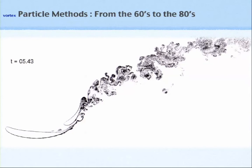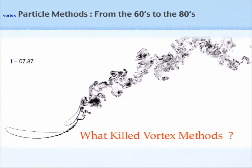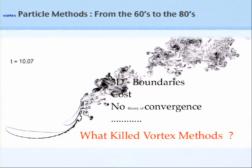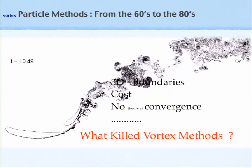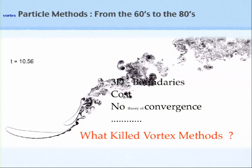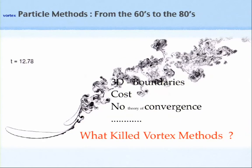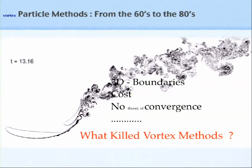There's nothing better than this, so you have to ask why not everybody is doing it. There were a few problems. Back in the 70s and 80s, vortex methods went extinct — the same way as the dinosaurs. People could not extend the method to three dimensions easily, there was no way to introduce boundaries, fast multipole methods had not been invented, and there was no convergence: you would double the number of points and get another result.